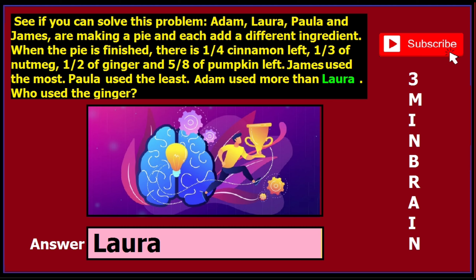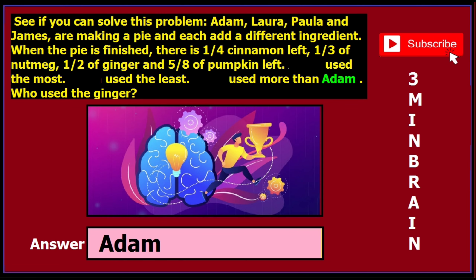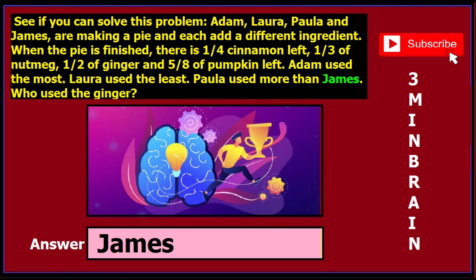Just see the second last sentence and the last word in it. In version 3 of this question, just read the second last sentence and the last word, which is Adam — so if you find the last word Adam, then the answer is Adam. In version 4 of this question, the last word in the second last sentence is James — J-A-M-E-S — so the answer is James. Just see that and that's your answer.